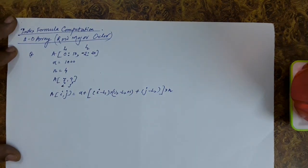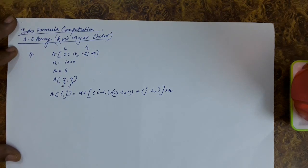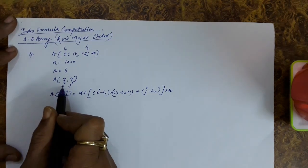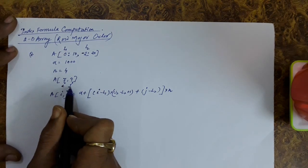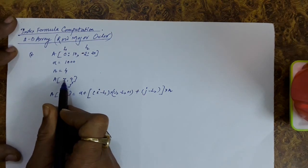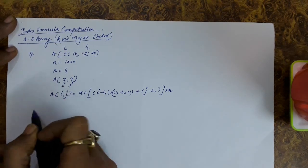So l1 is 0, l2 is minus 2, alpha is 1000, n is 4, i is 7 and j is 9. So i and j represent the index for which we need to find the address, which is a[7][9].